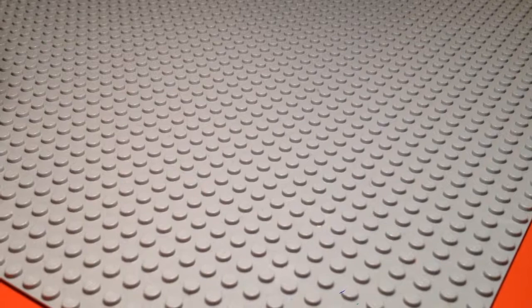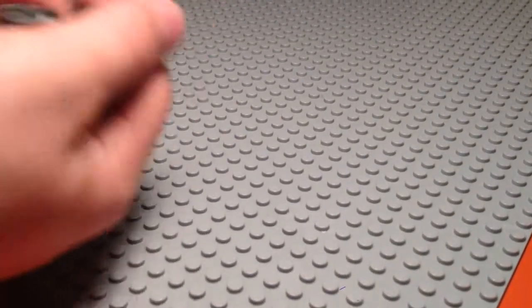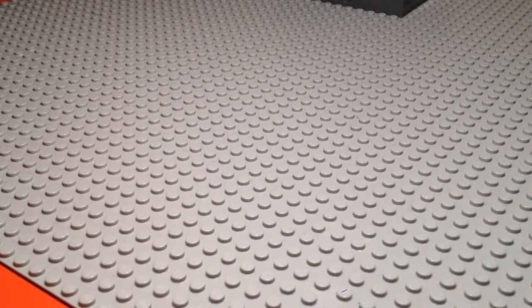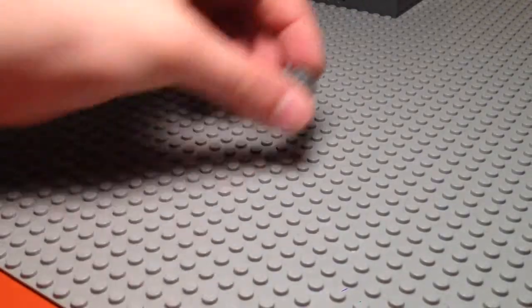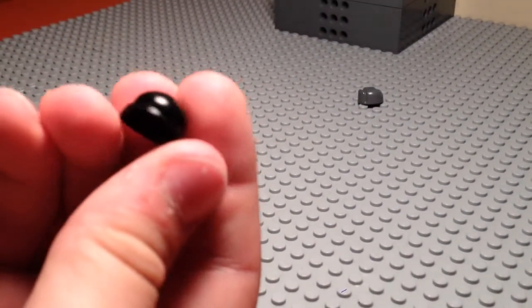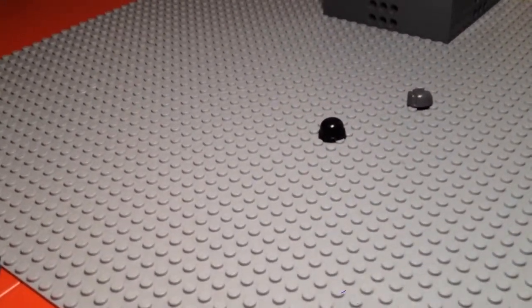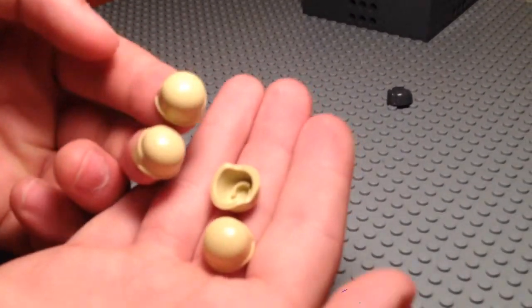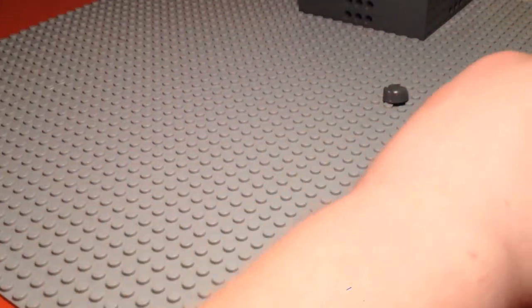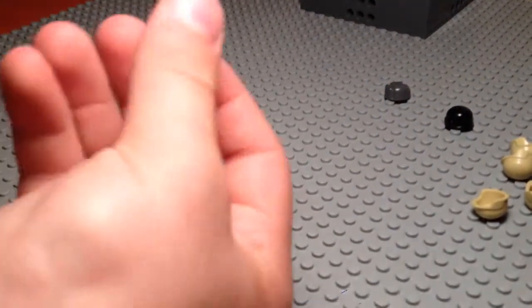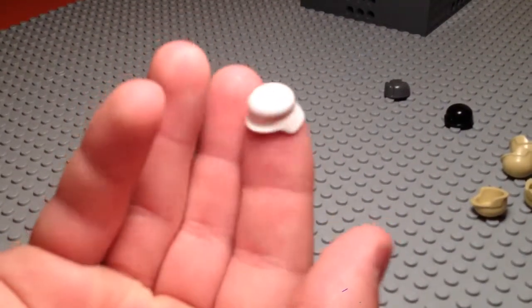First of all, our helmets and such. We have one dark gray Ushanka, one black Modern Combat Helmet, four light tan Modern Combat Helmets, one white Stahlhelm.